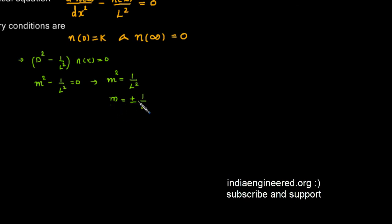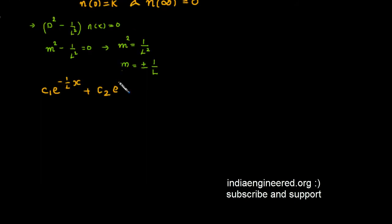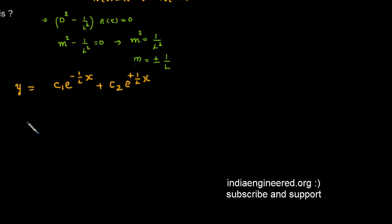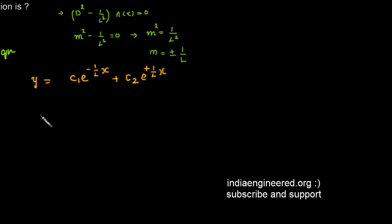The roots are real and distinct, so the complementary function is: n(x) = c₁·e^(−x/l) + c₂·e^(+x/l). Now we need to apply the boundary conditions.